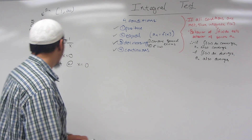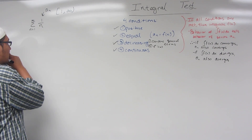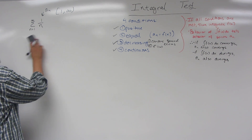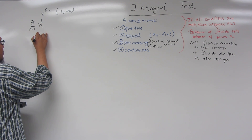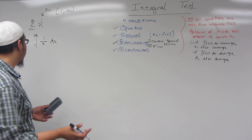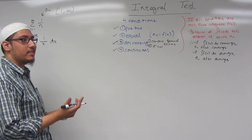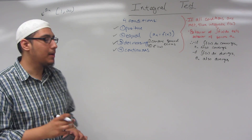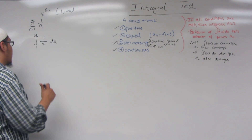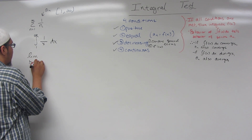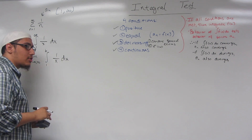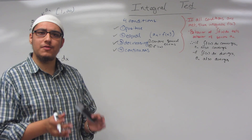Let's set up the integral. Since n starts at 1, the integral is from 1 to infinity of 1 over x dx. This is an improper integral, so we evaluate it with limits. We rewrite it as the limit as b approaches infinity of the integral from 1 to b of 1 over x dx. The integral of 1 over x equals the natural log of the absolute value of x plus c — a formula you must memorize.